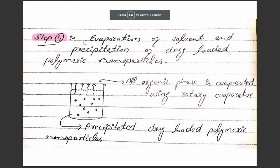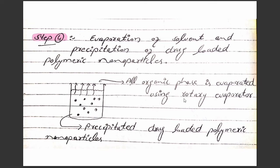The fourth step is evaporation of the solvent. After evaporation, we get precipitation of the drug-loaded polymeric nanoparticles. As seen in the diagram, the organic solvent is evaporated using a rotary evaporator and we obtain precipitated drug-loaded polymeric nanoparticles.